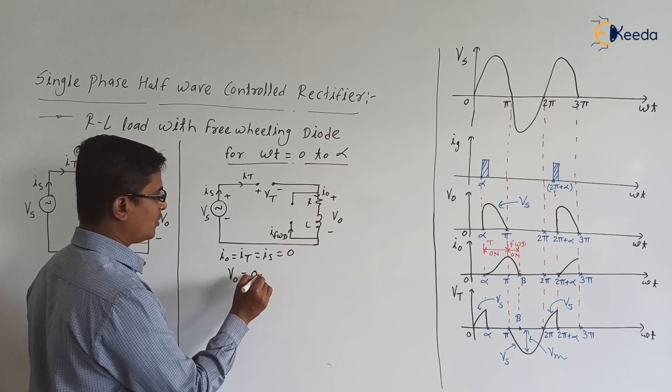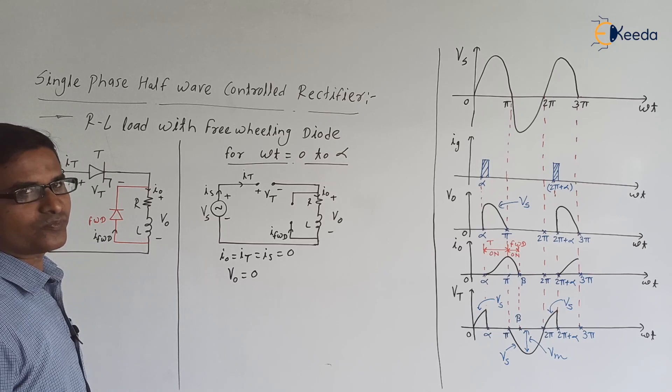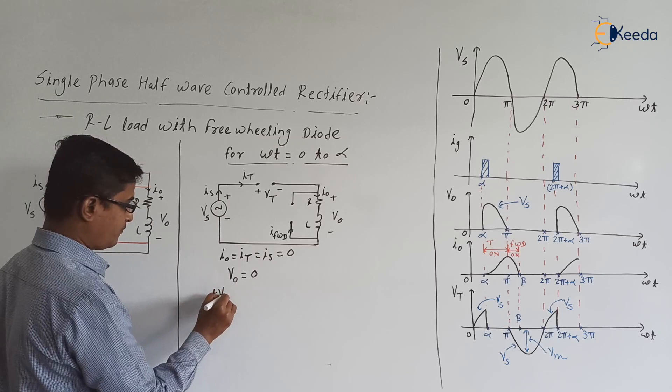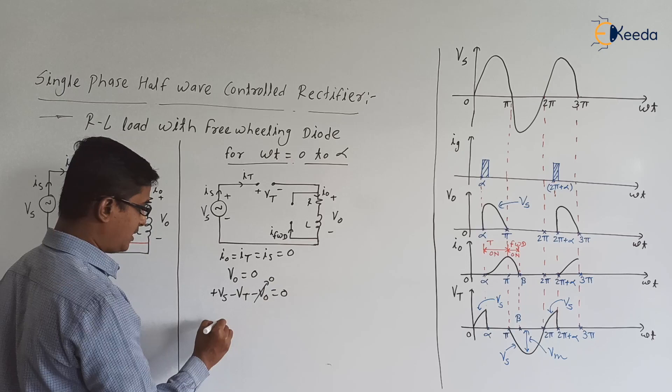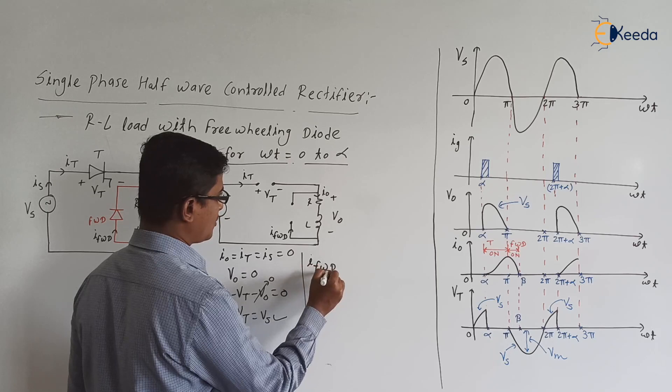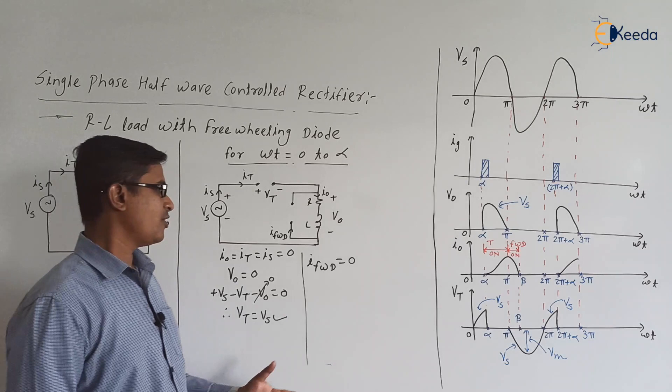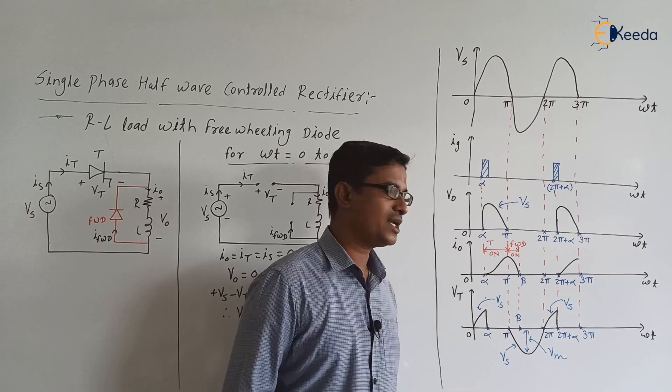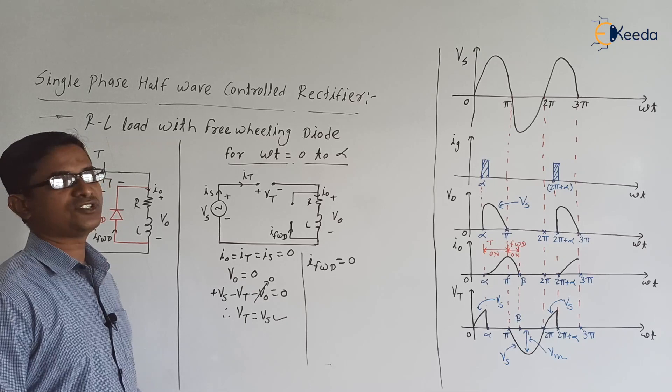Since the load current is 0, the load voltage V0 is also 0. Applying KVL: Vs − Vt − V0 = 0. Since V0 = 0, we get Vt = Vs. The freewheeling diode is in the off state, so IFWD = 0. Checking the waveforms from 0 to α: V0 = 0, I0 = 0, and Vt = Vs.